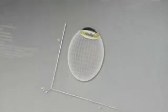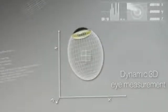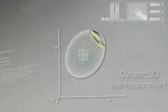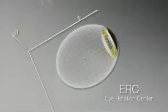For the first time, a live three-dimensional measurement of the human eye can be performed in your office, quickly and accurately. This dynamic 3D measurement determines the exact spatial position of the eye rotation center, also known as the ERC.